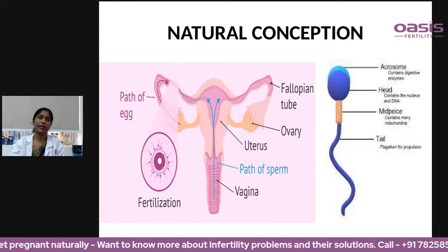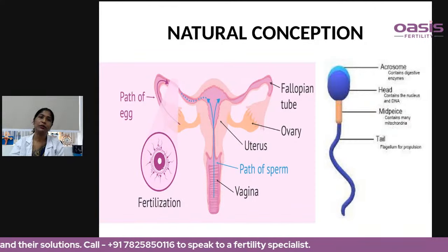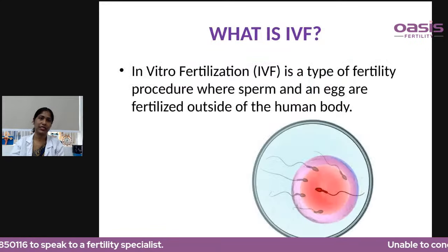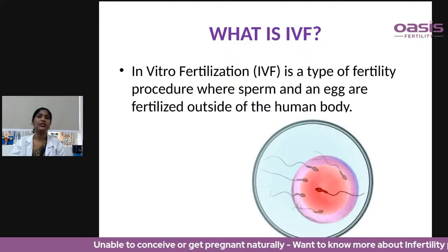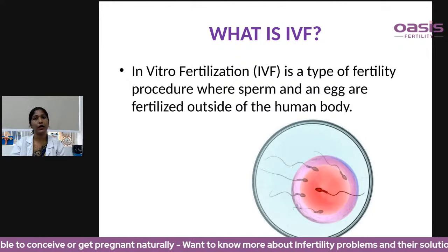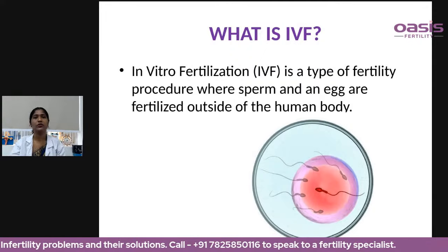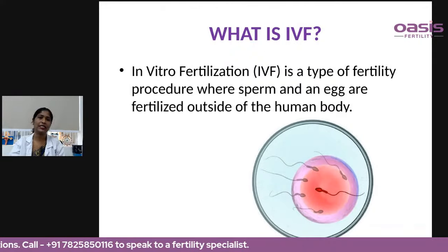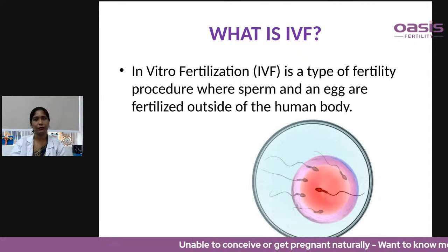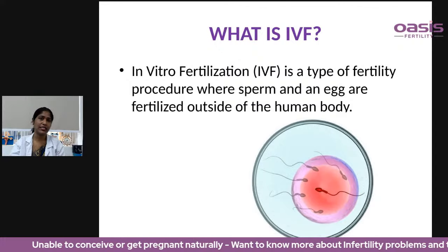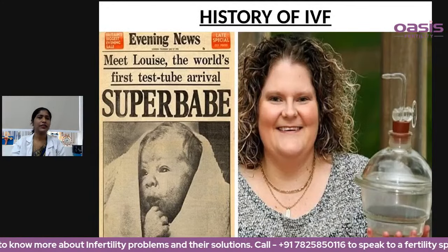Such a complex mechanism for pregnancy is happening inside the fallopian tube. When all this happens outside the human body, the process is called in vitro fertilization. It is a fertility procedure — also known as IVF — where the egg and sperm meet outside the fallopian tube and fertilization happens outside the human body. The term 'in vitro' is a Latin word for glass, because when the first IVF happened, the sperm and egg were placed together in a glass dish — that's how the name came about.